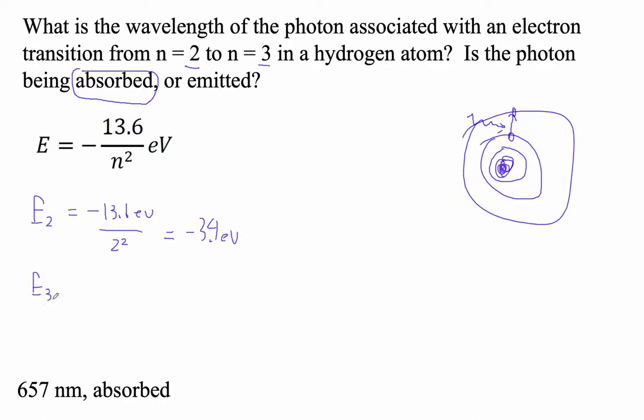And then the energy of the third is minus 13.6 eV over three squared. And that is minus 1.51 repeating eV, right? And then the difference between those